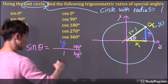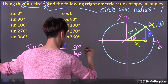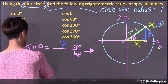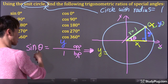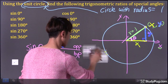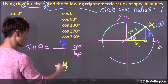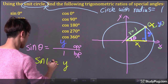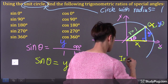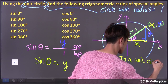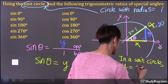So in a unit circle, sine theta equals Y over 1. And since Y divided by 1 is just Y — because anything divided by 1 is itself — Y equals sine theta. So in a unit circle, the Y-coordinate represents sine theta.